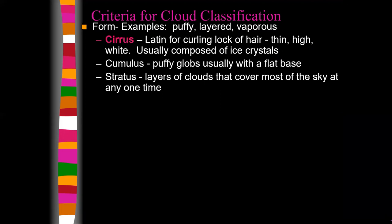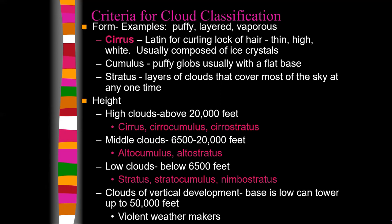There was an Englishman by the name of Luke Howard — I think in the 1800s — who decided to take it upon himself to start classifying clouds. He decided they can be classified by the form they take and by the height they reach. For the form he used Latin terms to describe the forms of clouds.